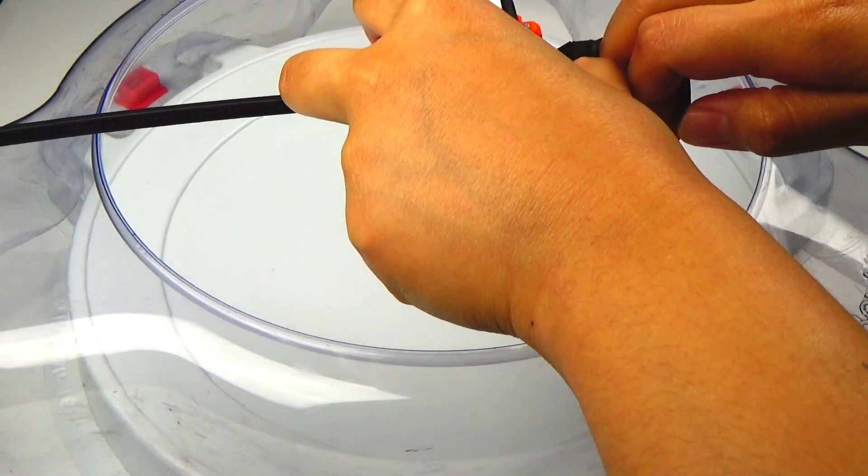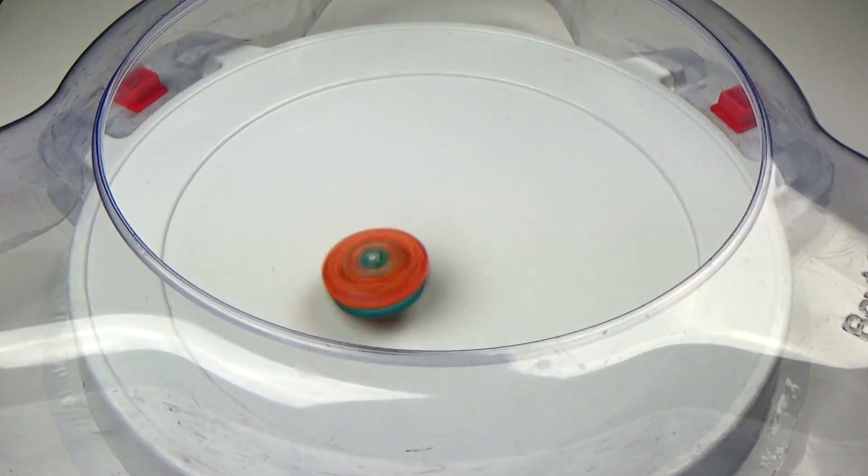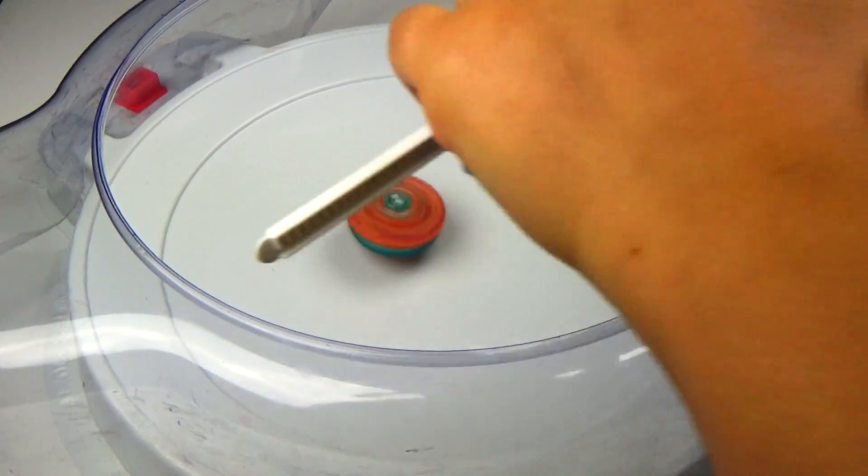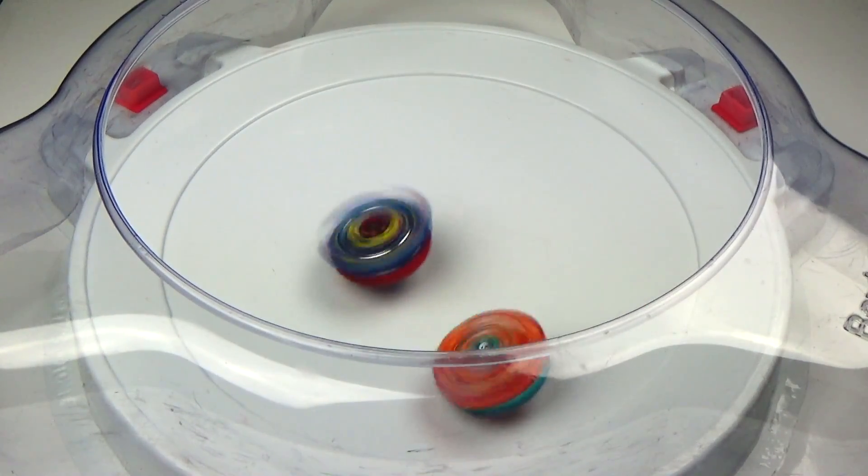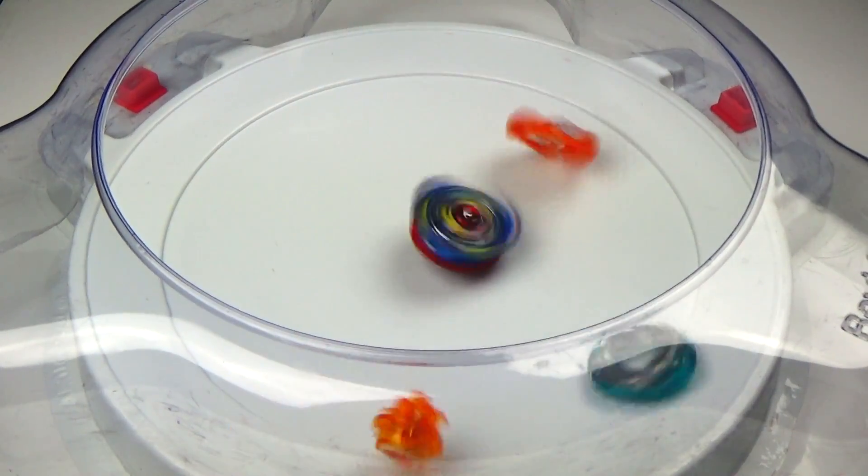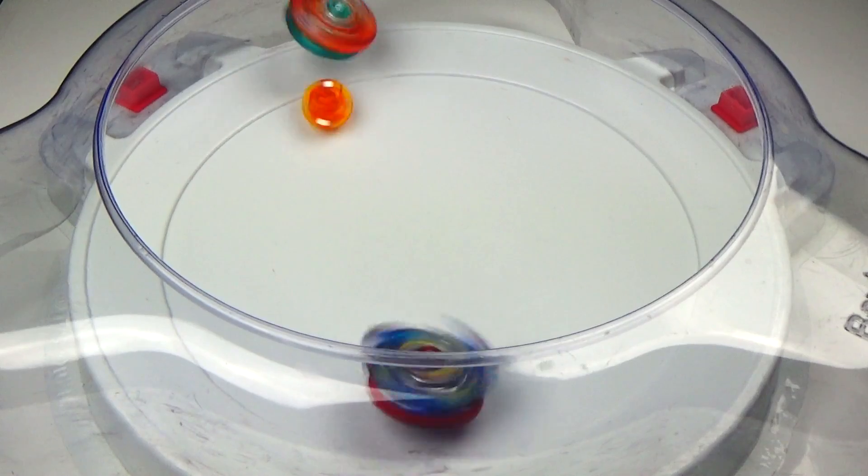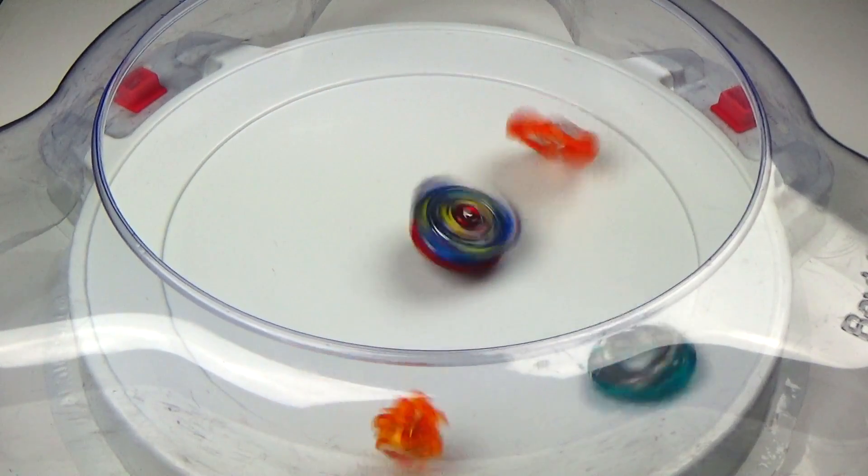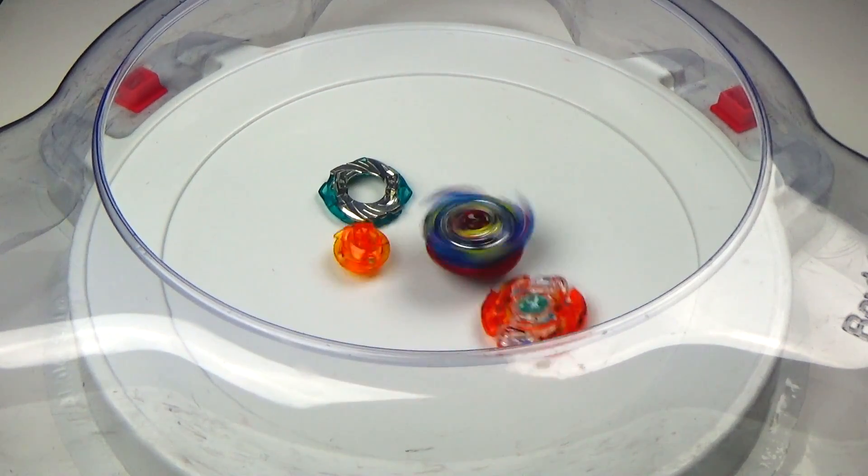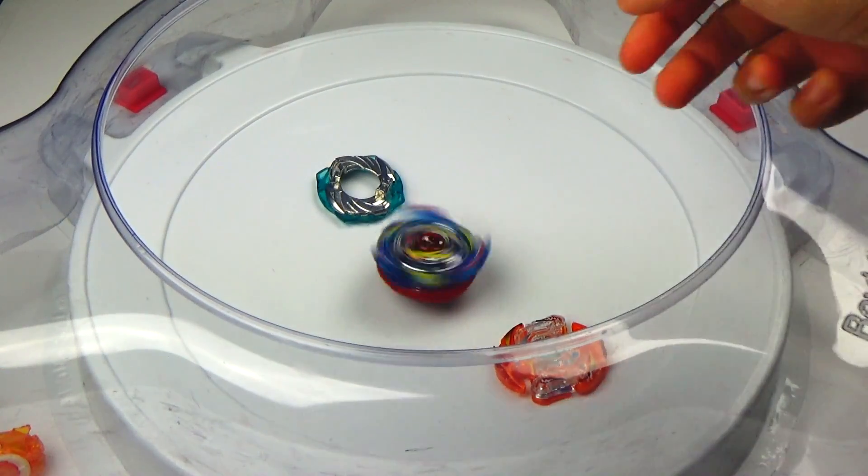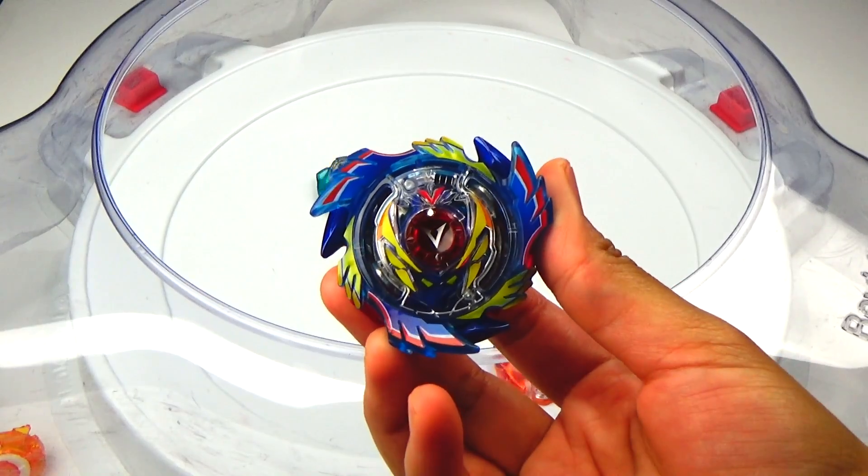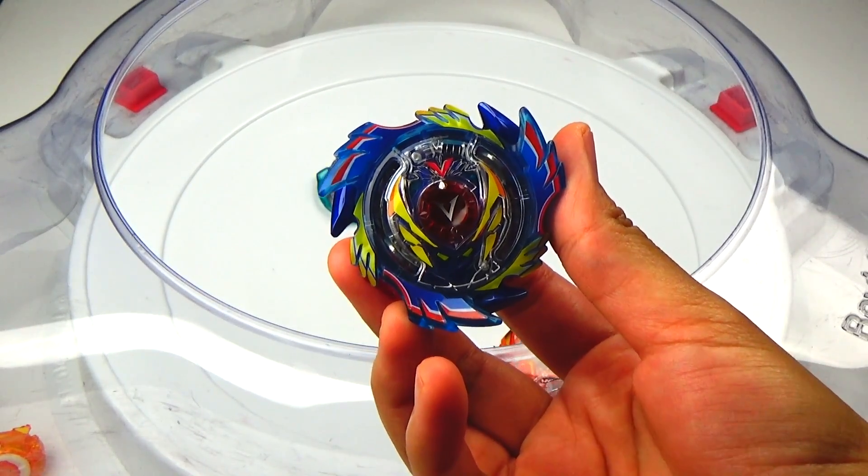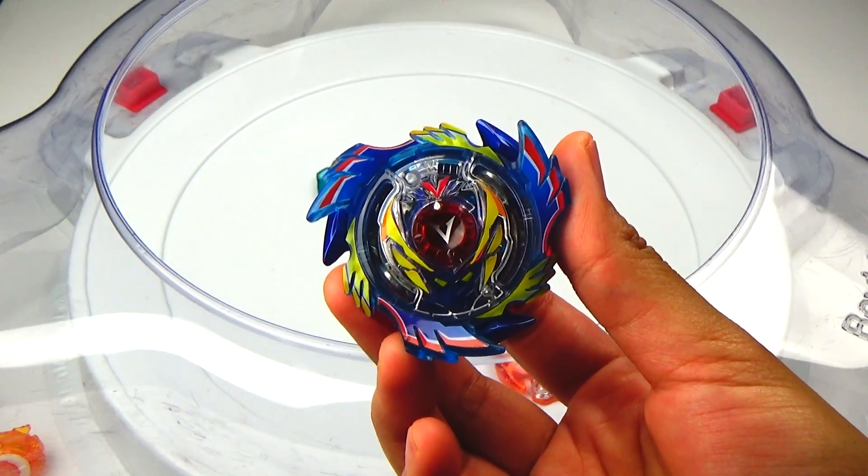Round four, three, two, one, go shoot! And we have another burst! That is three in a row for God Valkyrie. Six points! Your winner for this Beyblade Burst battle is God Valkyrie. Thanks for watching.